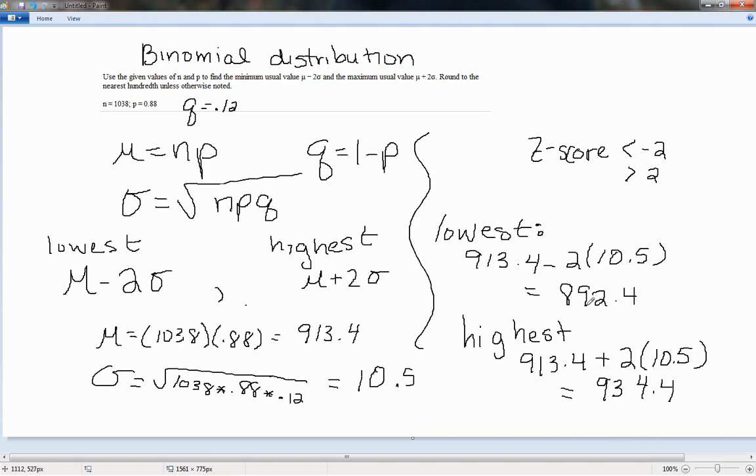So these would be our cutoff points. Our interval of usual values would go from 892.4 up to 934.4.